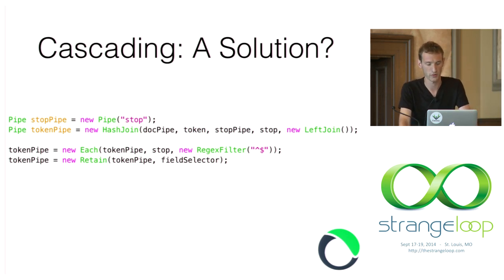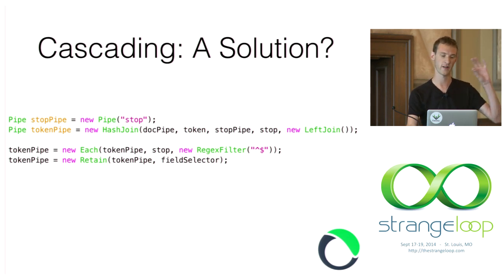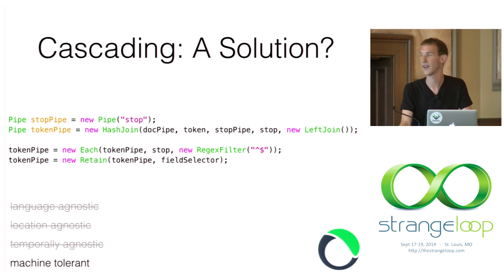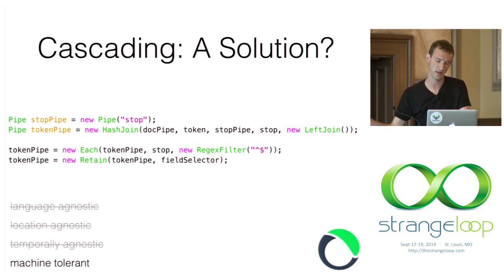Looking at modern tooling, the first one I dealt with was Cascading, a Java MapReduce framework on top of Hadoop. Cascading is about having a class per operation, instantiating these operations and chaining them through constructors to form an implicit flow. It works well enough and lots of people use it, but if we look at the four characteristics I care about, we miss out on the first three. Clearly it's Java — you're not transcending out of the language, you can't easily put this code on a wire, and you can't easily put it in a database.